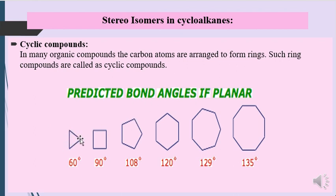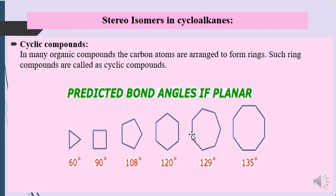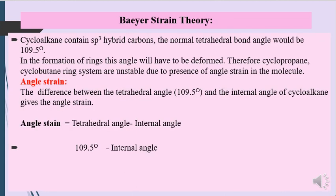The bond angles in planar rings: the three-membered ring is called cyclopropane, four-membered is cyclobutane, five-membered is cyclopentane, six-membered is cyclohexane, seven-membered is cycloheptane, and the eight-membered ring is called cyclooctane. The bond angle is 60° in cyclopropane, 90° in cyclobutane, 108° in cyclopentane, 120° in cyclohexane, 129° in cycloheptane, and 135° in cyclooctane.